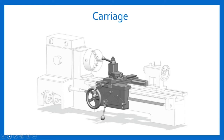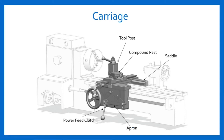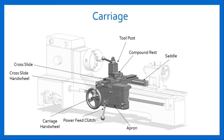The carriage assembly consists of: tool post, compound rest, saddle, apron, power feed clutch, carriage hand wheel, cross slide hand wheel, and cross slide. Let's study all these components in detail.